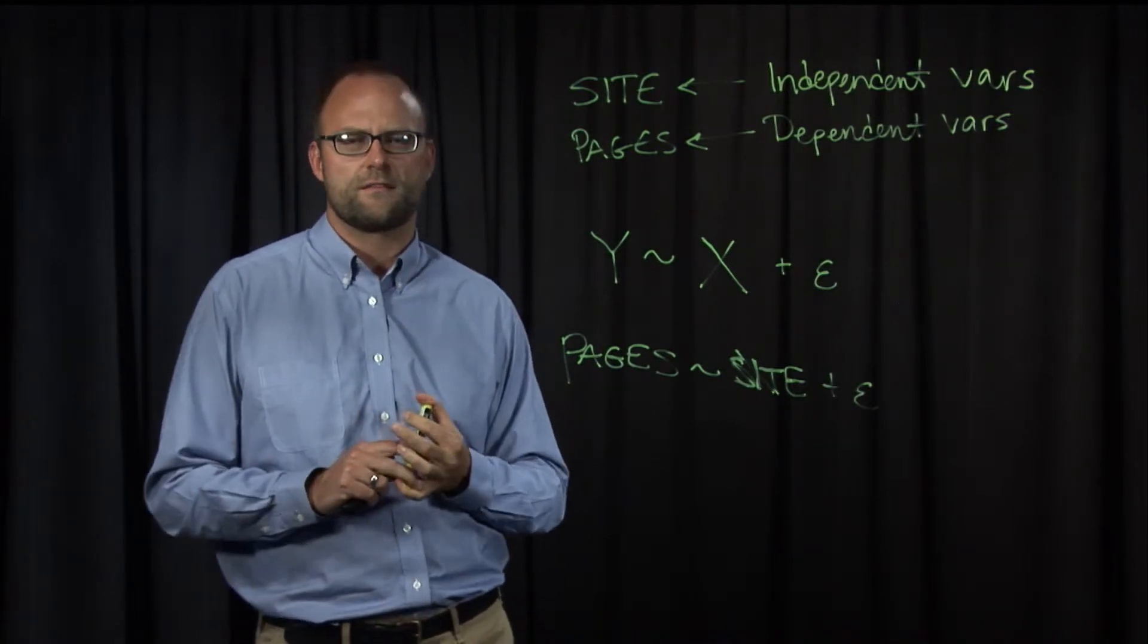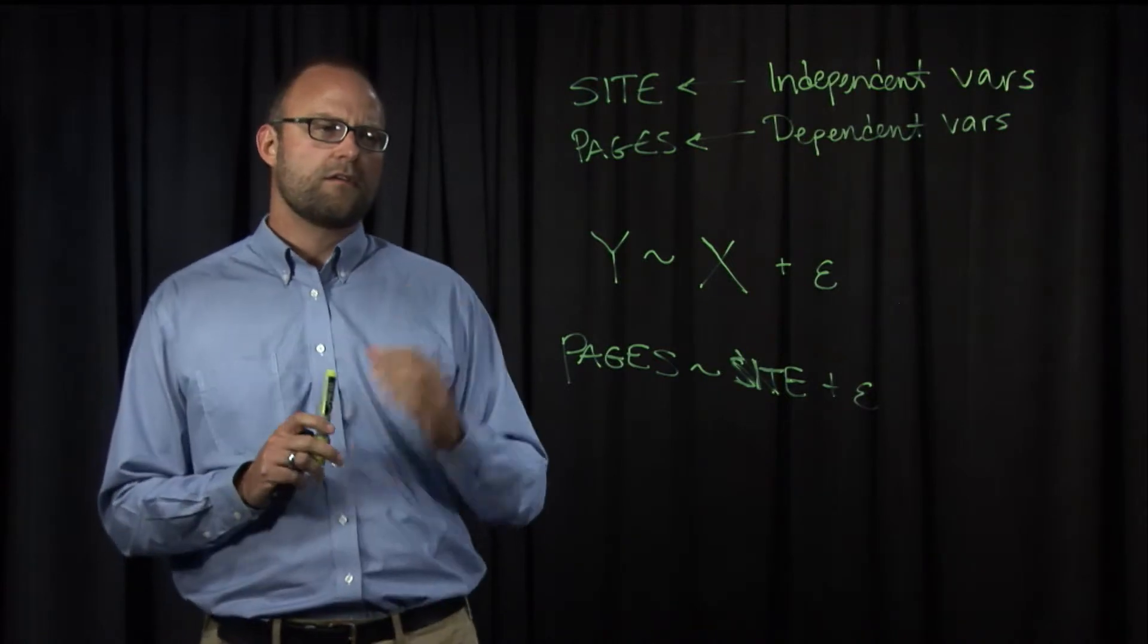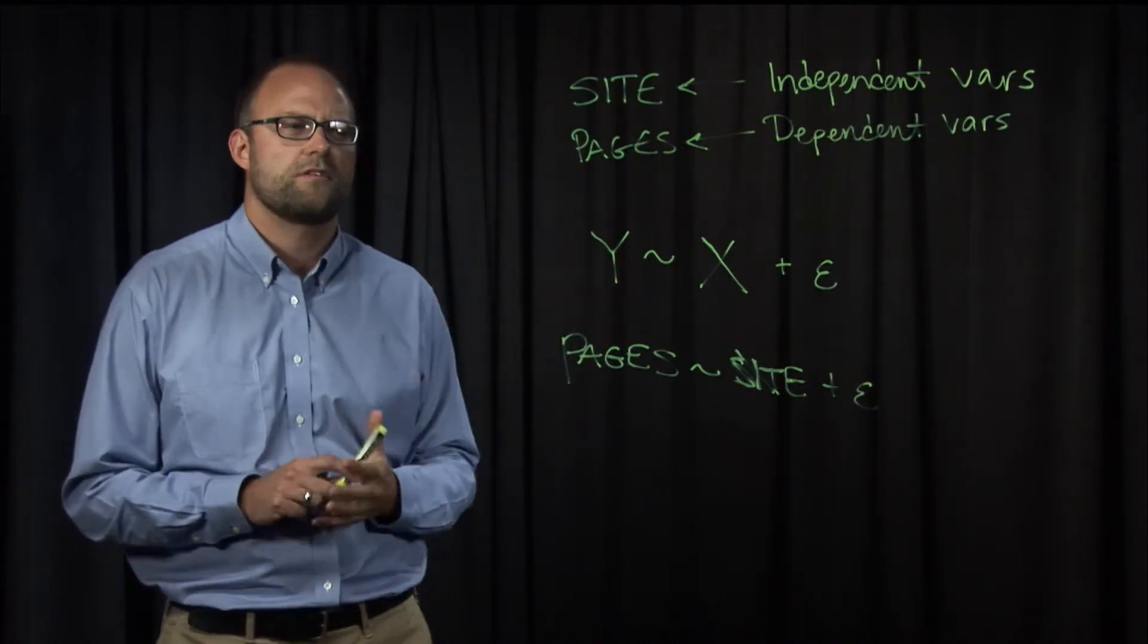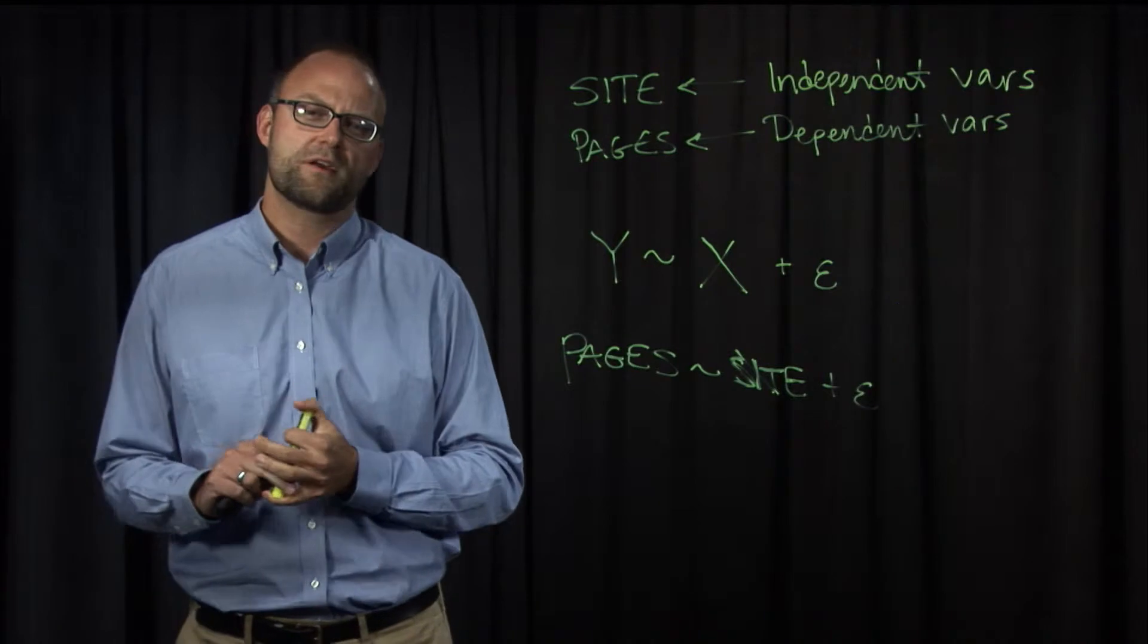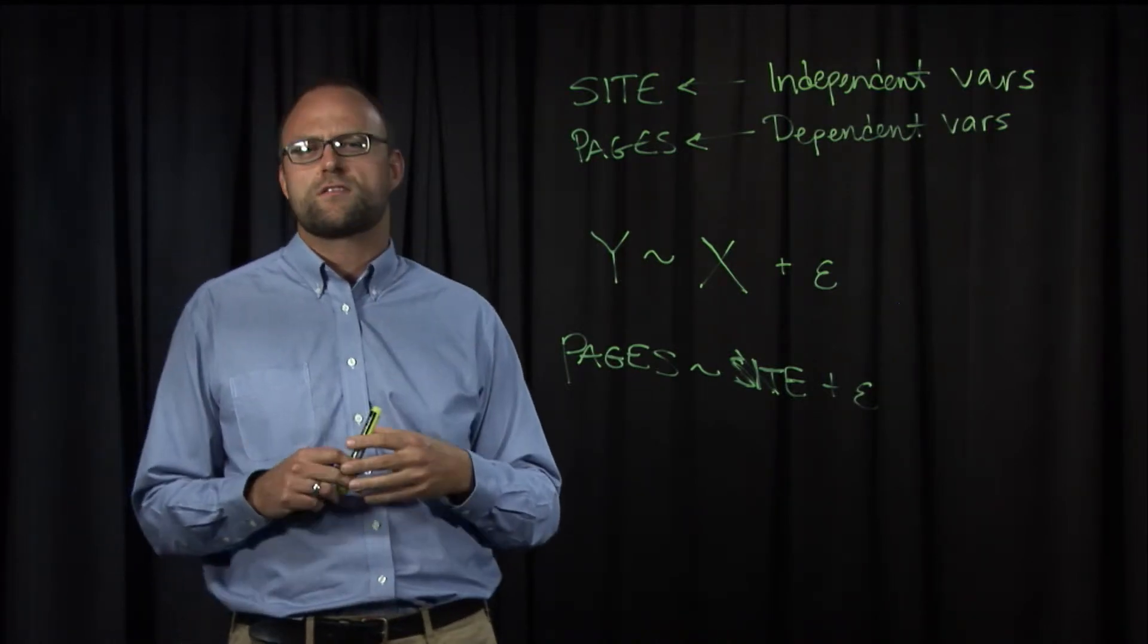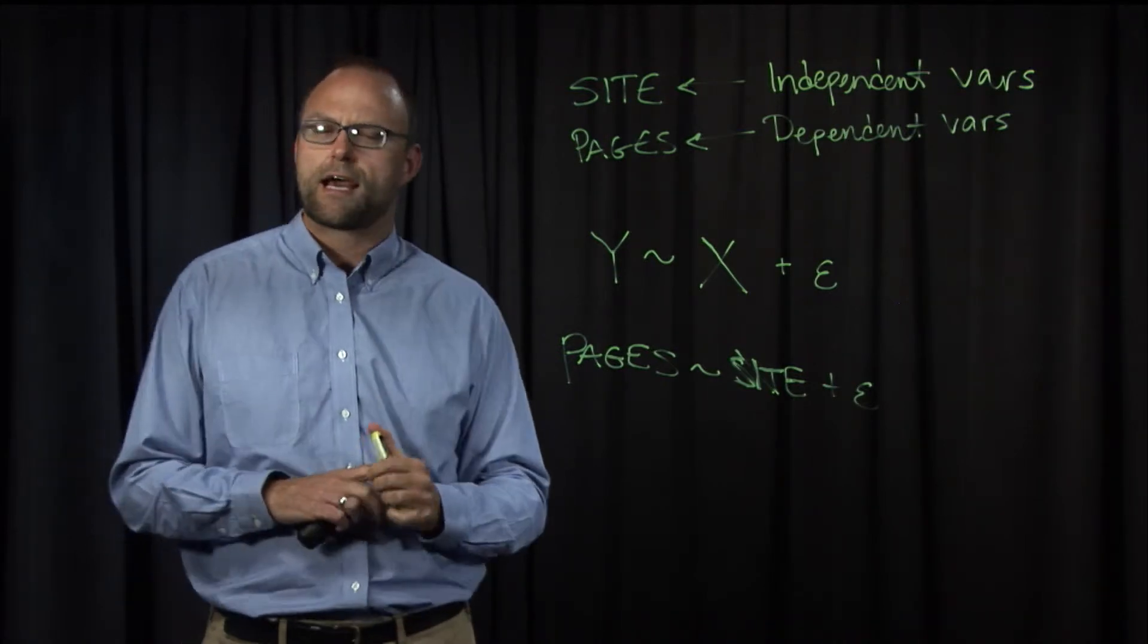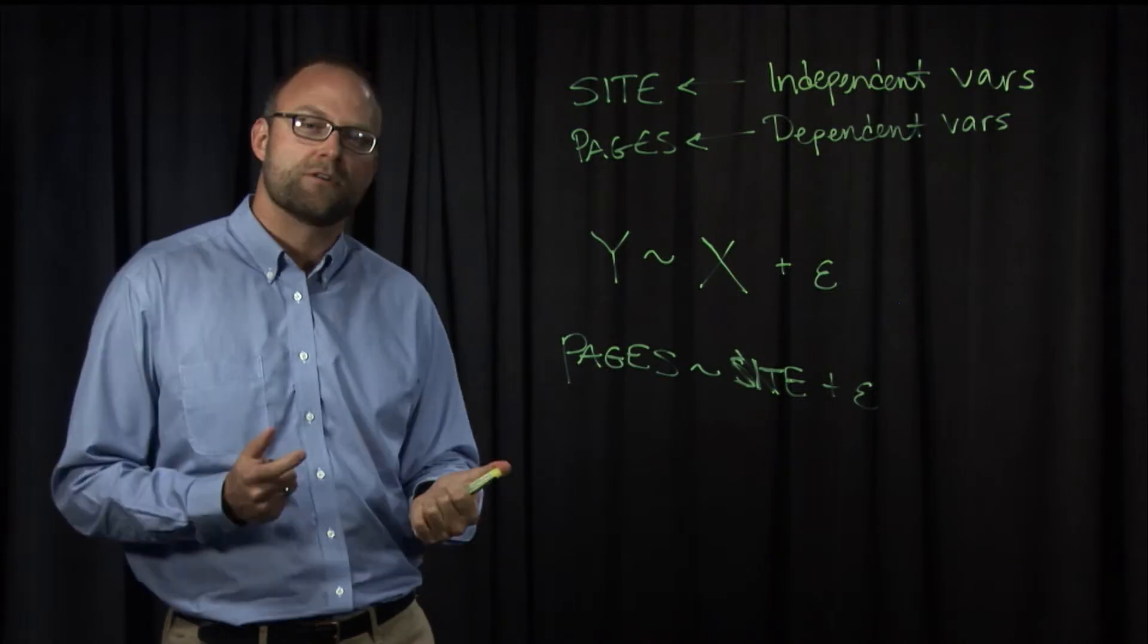Now there's something else to be said about the design of this experiment as well. And that is that these variables each have types. And it's important to be aware of variable types. We saw in the previous section that we were recoding the subject variable as a factor, which is R's term for a categorical or nominal variable type.